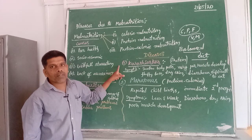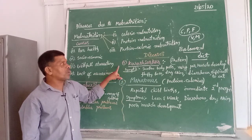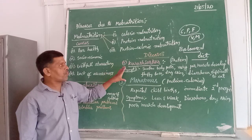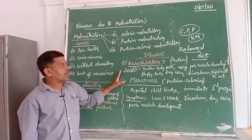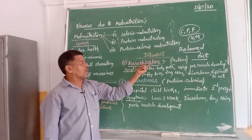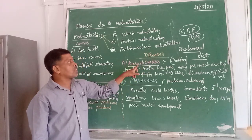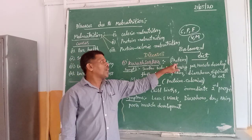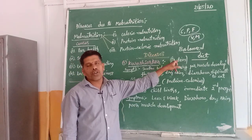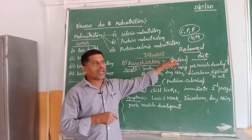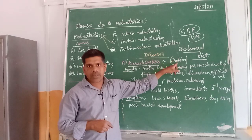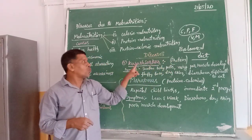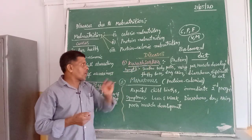Where children are not given a good, proper diet, such types of diseases are most common, and were first identified in African countries. Kwashiorkor is an example of deficiency of proteins in the food. If the food given to the child does not contain the required quantities of proteins, then the deficiency leads to a disease called Kwashiorkor.